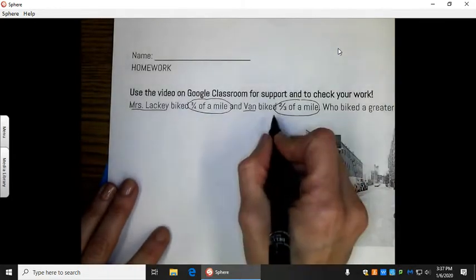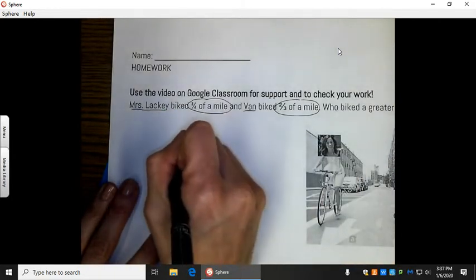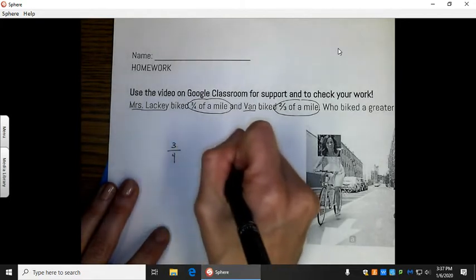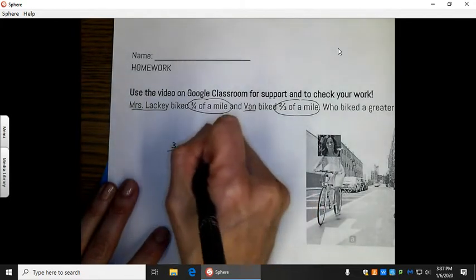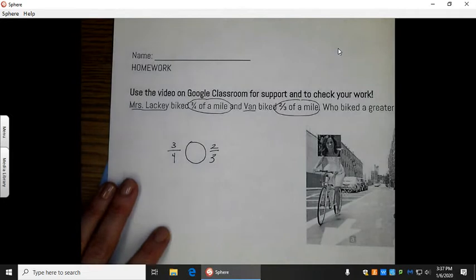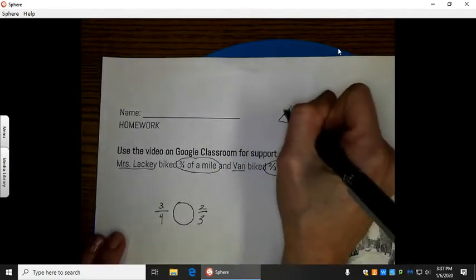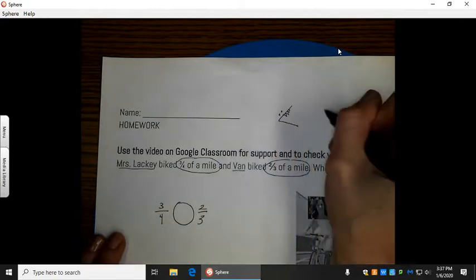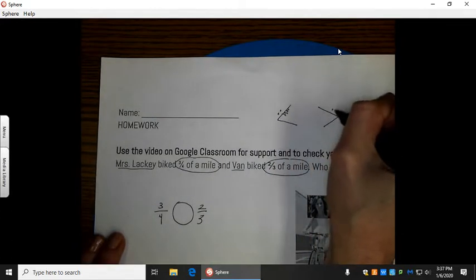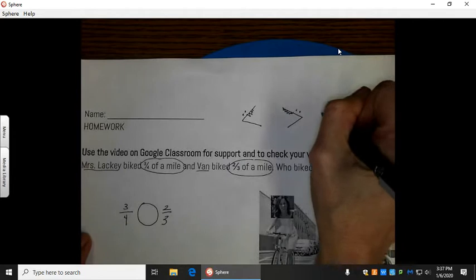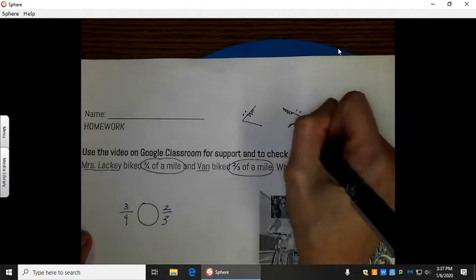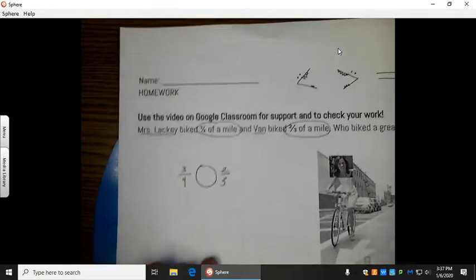Okay, so we've got three-fourths and two-thirds. We're comparing them and seeing which one is greater. If it's less than, it goes that way, remember? Kind of like an L. If it's greater than, it goes that way. Or, it could potentially be equal to. That's really what we're doing.